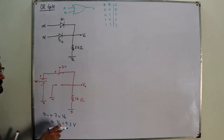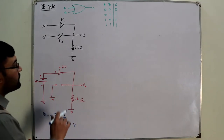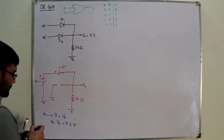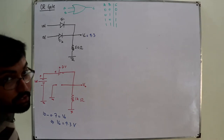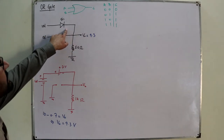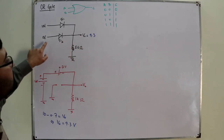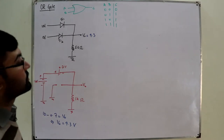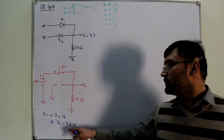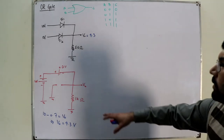So V_naught comes out to be 9.3 volts, which means the output is high — this is acting as an OR gate. Now let's confirm the probability. The 10 volts at the P side is greater than 9.3 volts at the N side, so diode 1 is on. The 9.3 volts at the N side is greater than the 0 volts at the P side of diode 2, so diode 2 is off. The word 'probably' has now been confirmed by the value of V_naught.